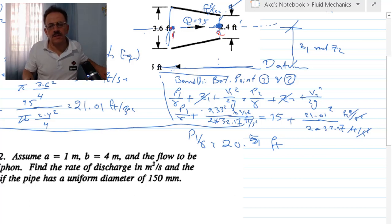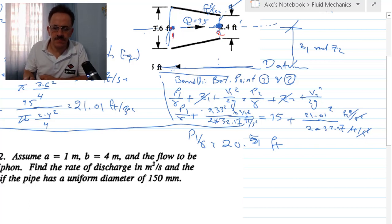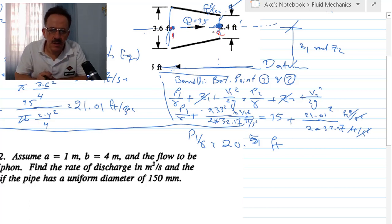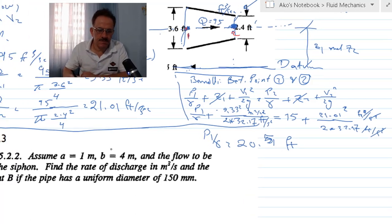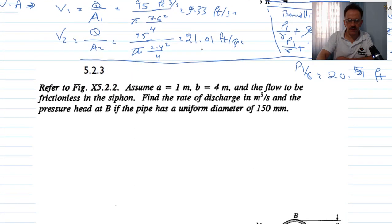As you can see, the pressure head at point one is 20.51 feet and the pressure head at the smaller point two is 15 feet. This pressure difference is what drives the flow from point one to point two.